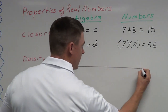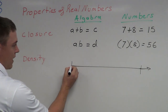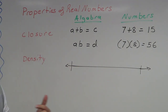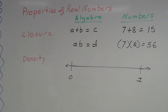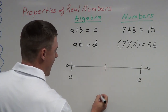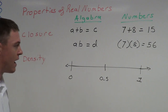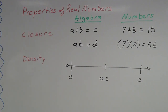I'll draw a number line with arrows on both sides since number lines go on forever. I'll choose two real numbers: 0 and 1. The density property states that between these two numbers there's always going to be another real number. For example, right halfway in between is 0.5. There's always going to be a number between two numbers.